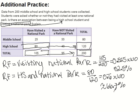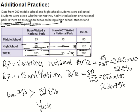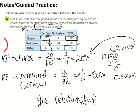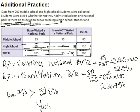Since 66.7% is greater than just visiting a national park at 52%, there is a relationship. Being a high schooler increases the likelihood of visiting a national park. The percentage goes up, so there is an association. Same idea as the chores example — 50% was greater than the initial 20%, which showed a relationship. You're more likely to visit a national park if you're a high schooler because the percentage clearly went up.